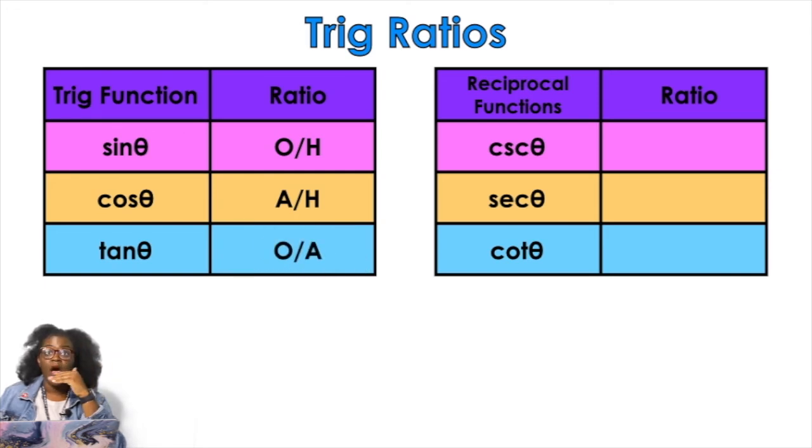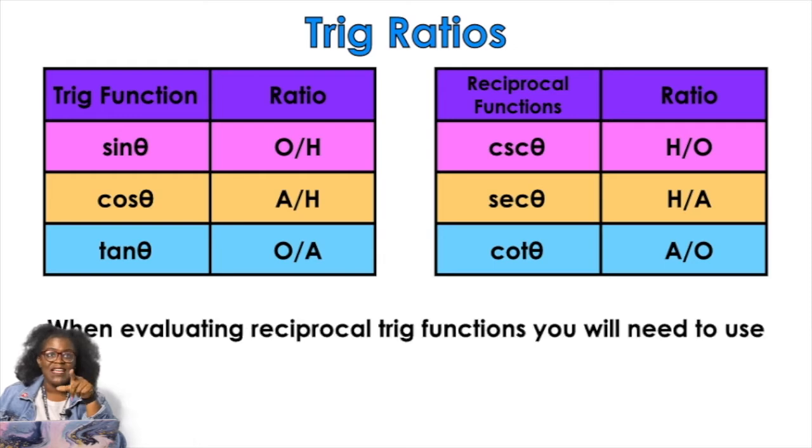So SOH-CAH-TOA. And then cosecant, secant, and cotangent are just reciprocal functions. So that means instead of O over H, it's H over O. Instead of A over H, it's H over A. And then instead of O over A, it's A over O.